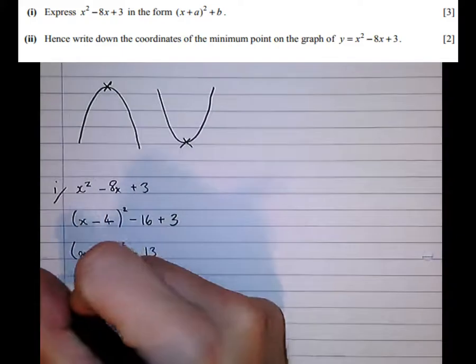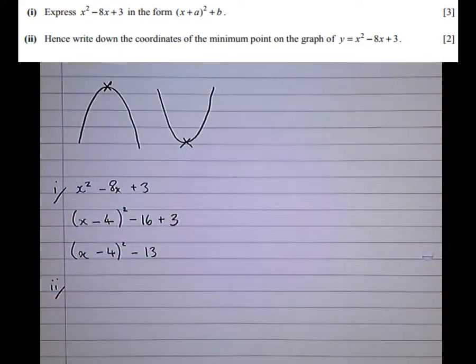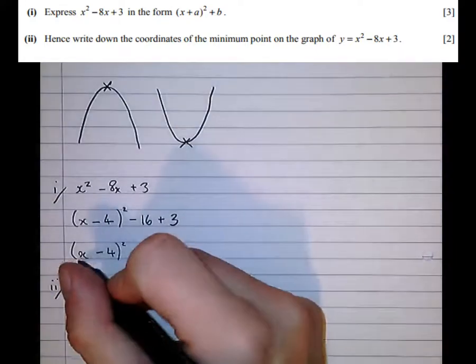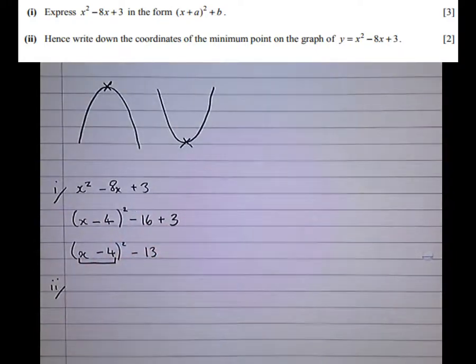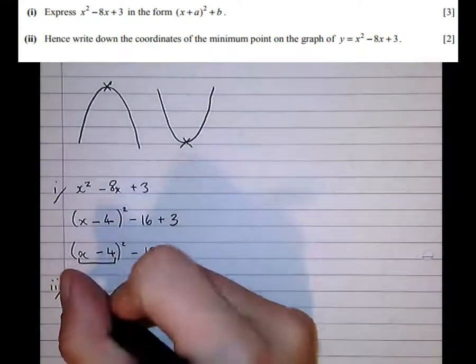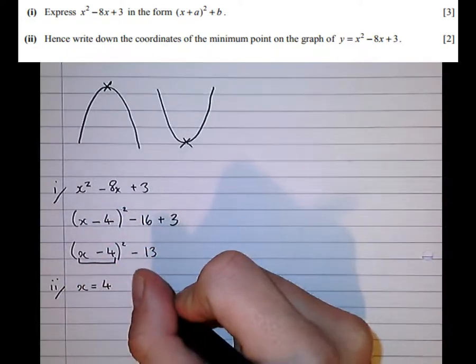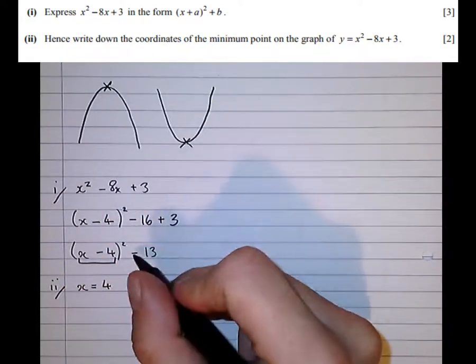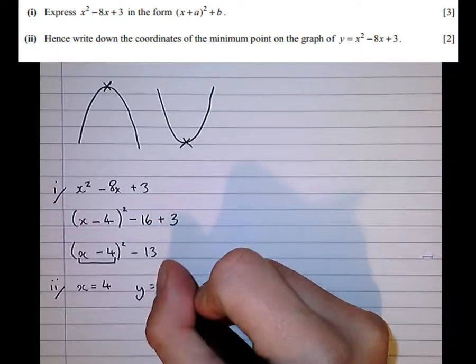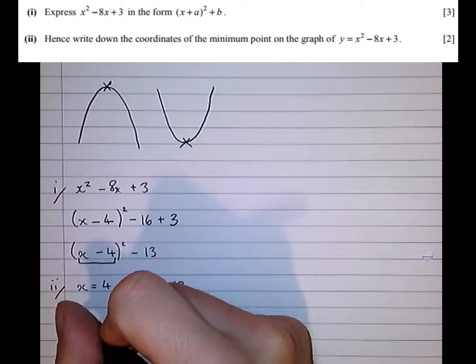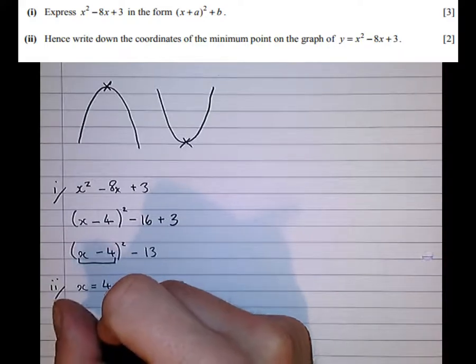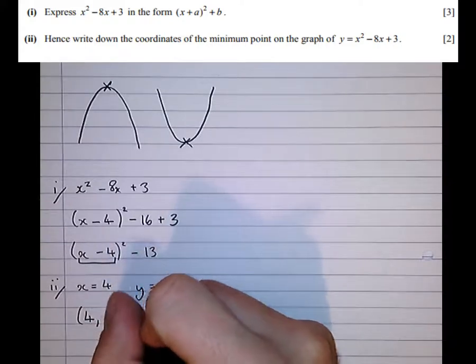Now for the new part. To find the vertex of a quadratic the x value is always what makes this bracket equal to 0. So as we can see here x minus 4 squared is in the bracket. To make the bracket equal to 0 we need x to equal 4. The y coordinate is then simply the bit left on the outside which is minus 13. So to answer the question the coordinates of the minimum point or otherwise known as the vertex are 4, minus 13.